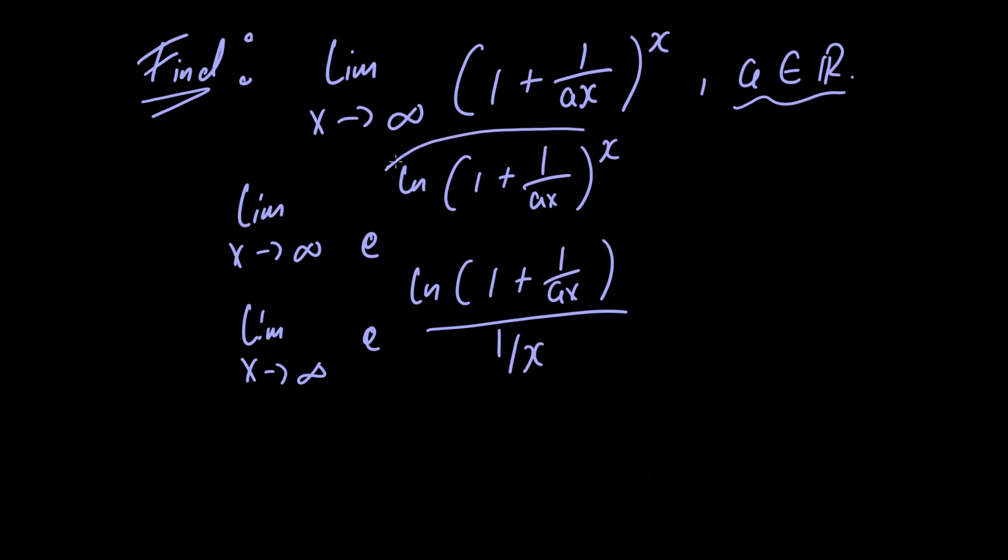All we've done is bring the power down to the front and instead of multiplying by that power we're dividing by 1 over that power which is equivalent to just multiplying by that power because if you have a times x this is equal to a divided by 1 over x as you would multiply by x here and by x here in order to get this expression here.